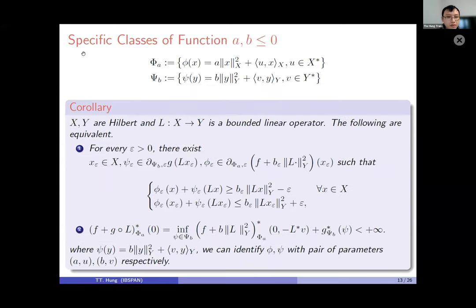We give an example where phi and psi are quadratic functions with negative parameters a and b. Because we can separate the quadratic and linear terms, the zero duality gap result holds: as long as the relevant inequality is satisfied, we have zero duality gap, and if we have zero duality gap the first statement follows.